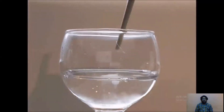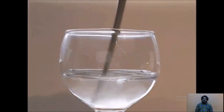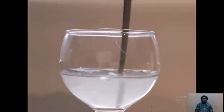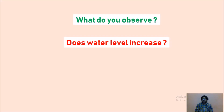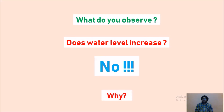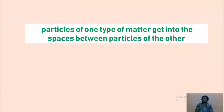After adding water, add one spoon of salt or sugar. With the help of a stirrer, glass rod, or spoon, try to mix it. What do you observe? Does the water level increase in the beaker? The answer is absolutely no. Why is there no increase in the level of water? The reason is that particles of one type of matter get into the spaces between particles of the other. The salt particles enter the spaces between water molecules.